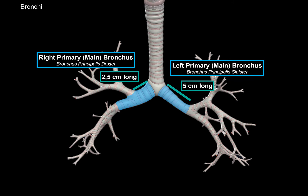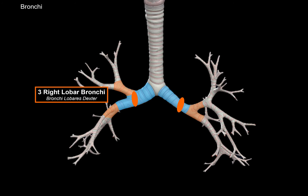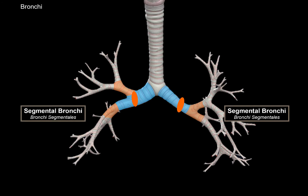The right and left primary bronchi will enter the lungs through the hilum of the lung, which is the entrance into the lungs. From here they divide into smaller bronchi according to the lobes of each lung. There are 3 lobes on the right lung, so the right one will divide into 3 lobar bronchi. The left lung has only 2 lobes, giving us 2 left lobar bronchi. After that, they will further divide into segmental bronchi — the right one into 10 segments and the left one into 8 segments, according to how the lungs are built.